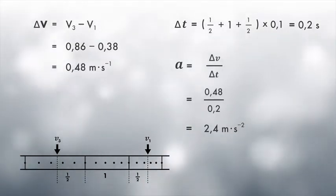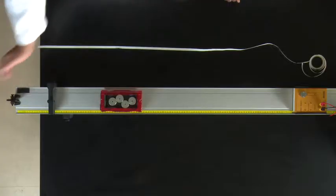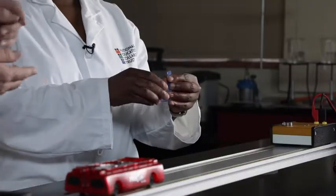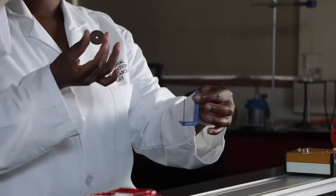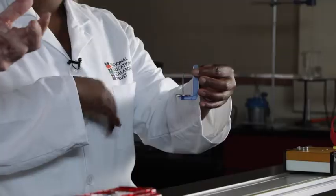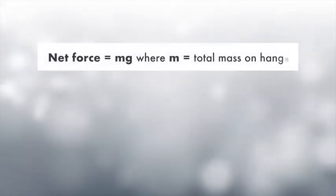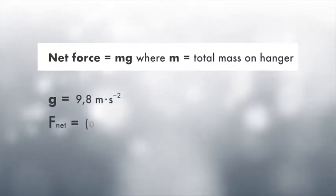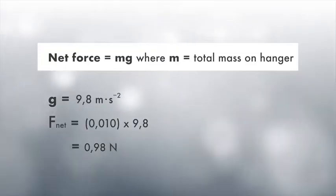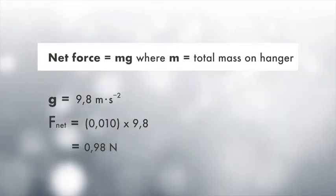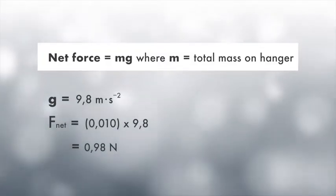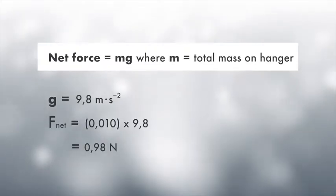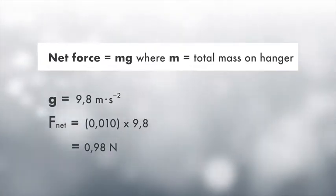The net force equals the weight of the slotted mass pieces hanging over the pulley. This mass hanger has a mass of 5 grams and the slotted mass piece has a mass of 5 grams, so the total mass is 10 grams. Converting to kilograms gives 0.010 kg. The net force equals mass times g, which is 0.098 newtons. Now we are ready to begin taking measurements.